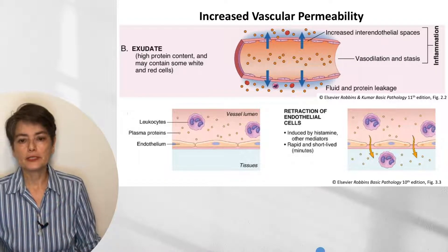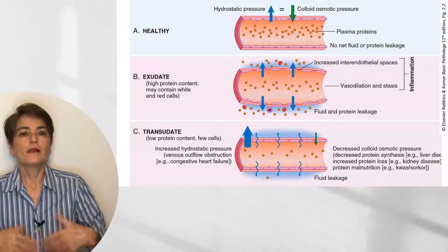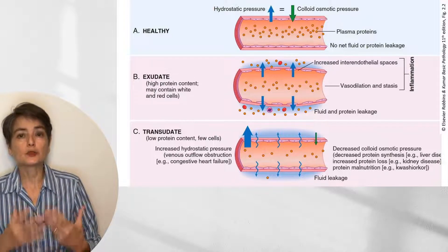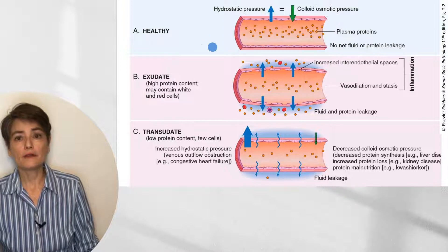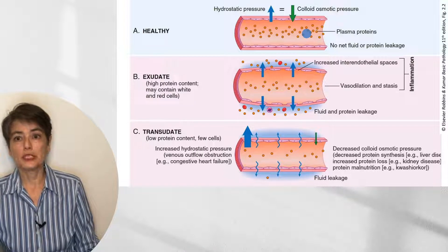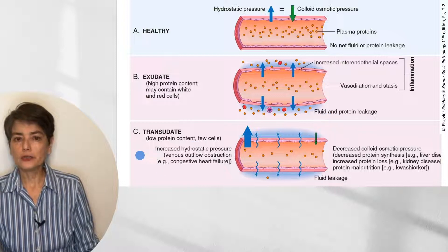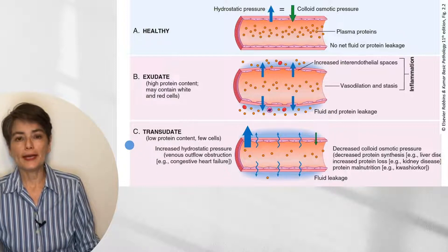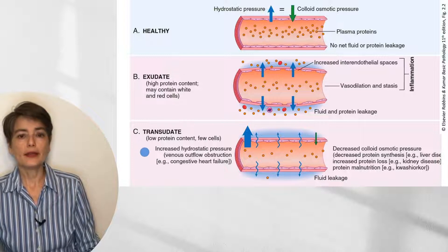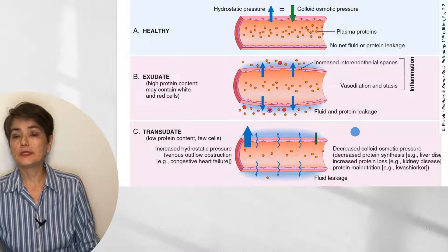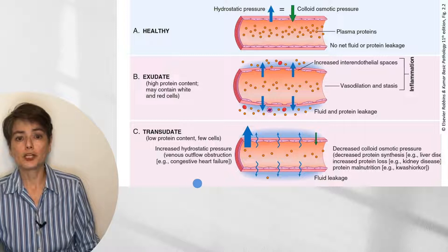Let's take a detour to talk about exudates and transudates. In the healthy individual, hydrostatic pressure and colloid osmotic pressure balance, so there is no net fluid or protein leakage. In an exudate, because we have increased space, slowing, and stasis, we get fluid and protein leakage. A transudate, in contrast, has low protein content and even fewer cells. We see transudates in two contexts: increased hydrostatic pressure, such as venous outflow obstruction in congestive heart failure, which pushes more fluid out leading to edema.